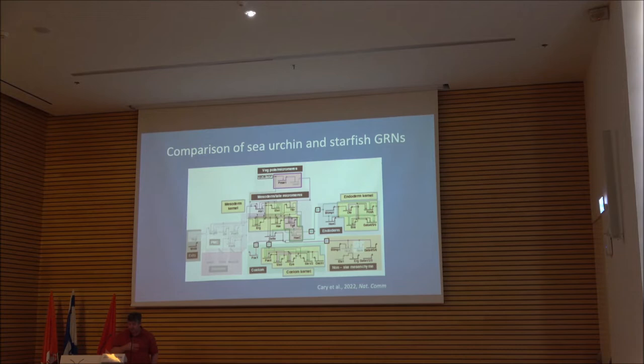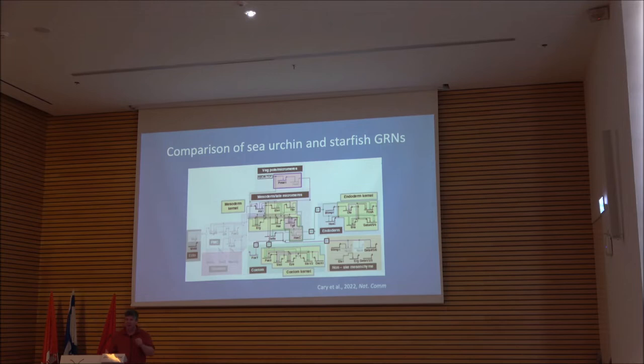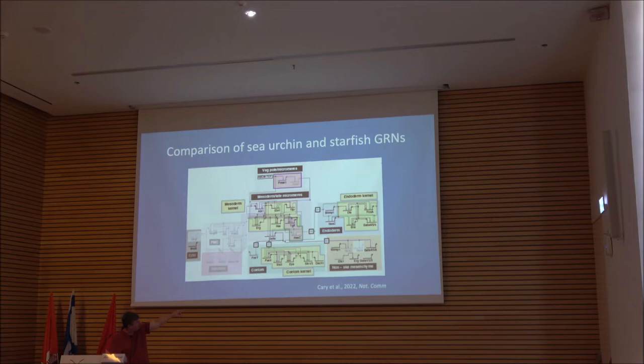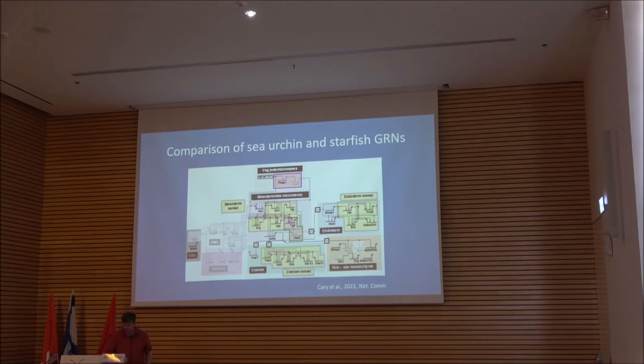This is a recent paper in Nature Communications from Veronica Hedman's lab, comparing the sea urchin to the starfish GRN. It's a really interesting paper because on the one hand, Veronica and her colleagues extend the idea of kernels from the mesoderm kernel to the coelomic kernel and an endomesoderm kernel. Yet they also point out that these kernels are reused, which violates the assumptions that were part of the original claim made in 2006.